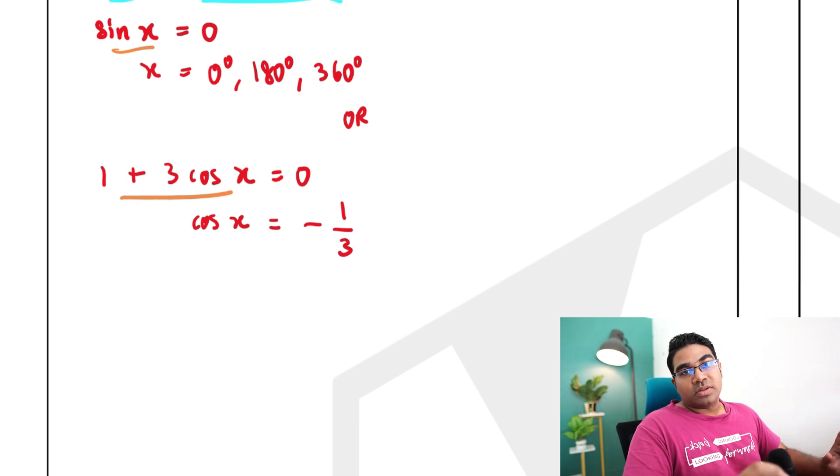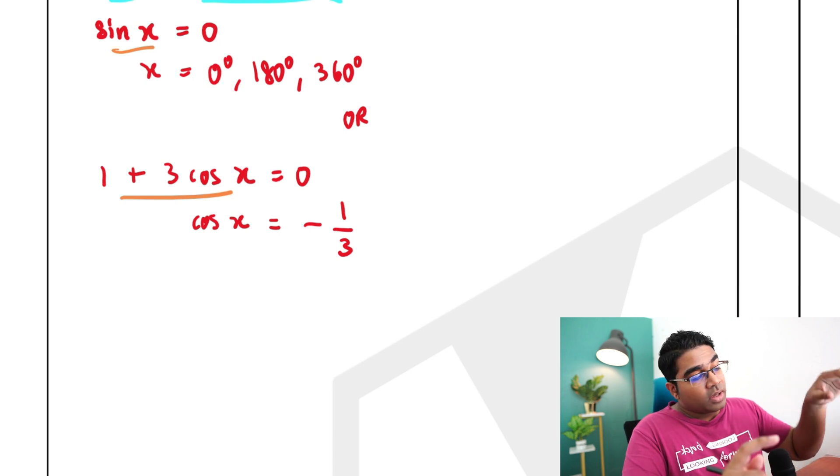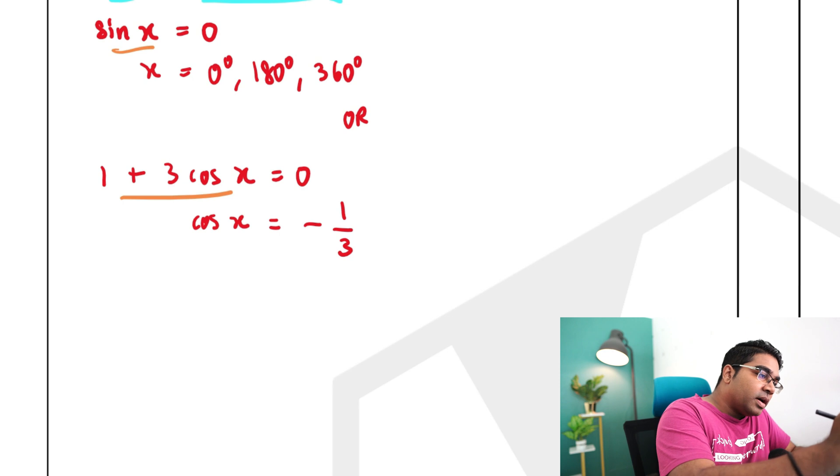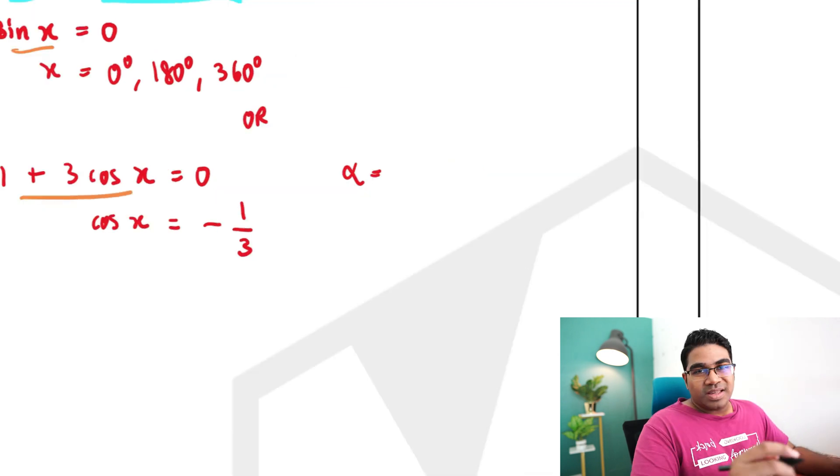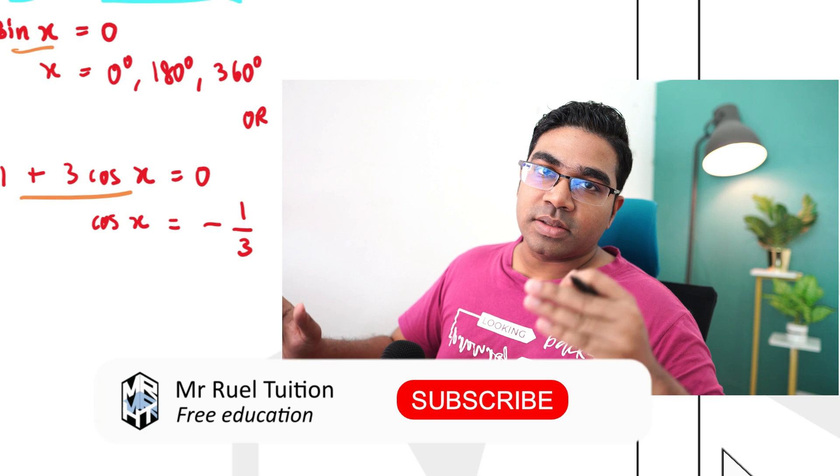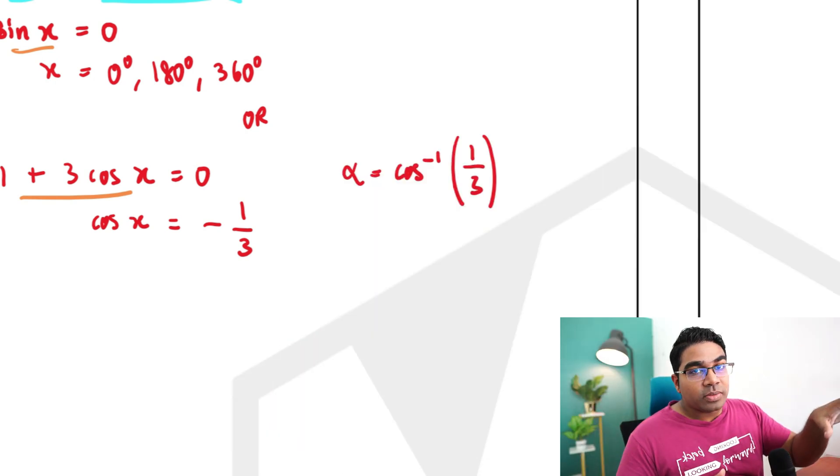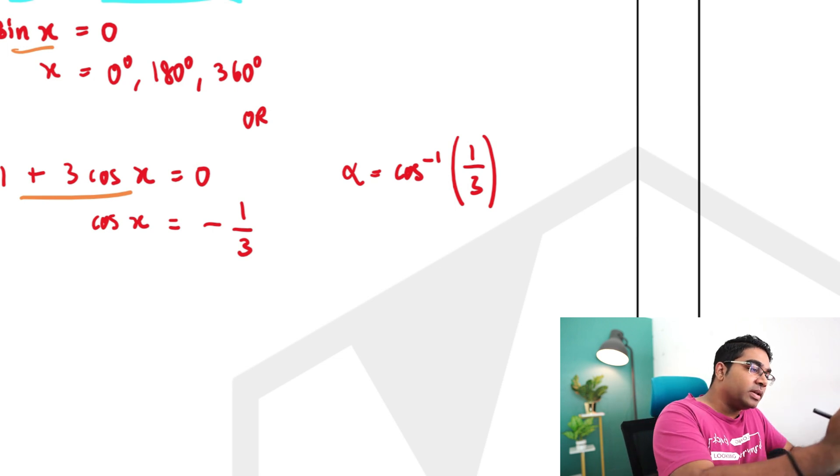So from here the first thing we need to do is to find our alpha. Whenever we are solving trigonometric functions we need to find alpha first. Alpha here would be inverse cos or arc cos of 1 over 3. Ignore the negative first. The sign is to tell us in which quadrant it belongs. This value, the magnitude will tell us the alpha value and this is equals to, just use your calculator.